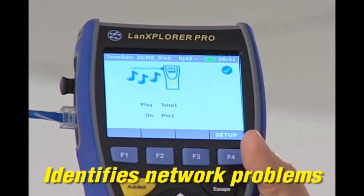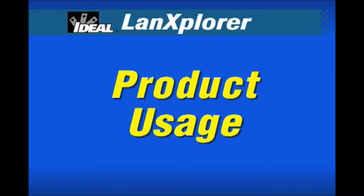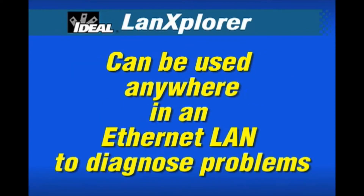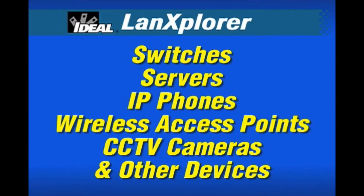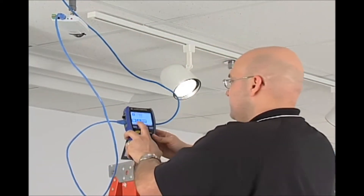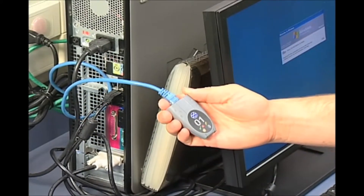LAN Explorer quickly identifies problems, stops finger-pointing, and saves time. The LAN Explorer PRO is a true multimedia tester for copper, fiber, and wireless networks. Its full gigabit capability allows it to be used anywhere in an Ethernet LAN to diagnose problems with switches, servers, IP phones, wireless access points, CCTV cameras, and any other Ethernet-enabled device. The LAN Explorer has excellent passive cable test functions for wire mapping and cable tracing, because 70-80% of network faults stem from cabling issues.